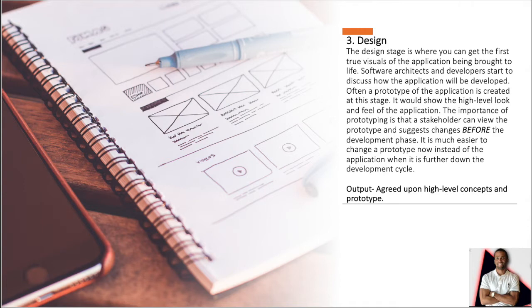Step 3 is design. The design stage is where you can get the first visuals of the application being brought to life. Software architects and developers start to discuss how the application will be developed. Topics that should be discussed include: platforms — what browsers or operating systems would the application be compatible with; security — are passwords or sensitive information being accessed, and will encryption be enforced; user interface — how will the customer view the application and how will it handle user input; and architecture — what programming languages will be used to develop this application. Often, a prototype of the application is created at this stage and will show the high-level look and feel of the application.